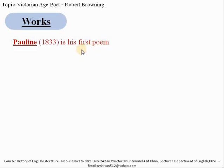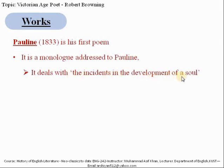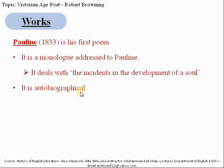Now let's discuss the important works of Robert Browning. The first one is Pauline, published in 1833, and this is his first poem. Like his other work, Pauline is a monologue addressed to Pauline and deals with incidents in the development of the soul. This poem is autobiographical and is essentially a fragment of personal confession under a thin dramatic disguise — he has disguised his personal confessions in a dramatic cover.